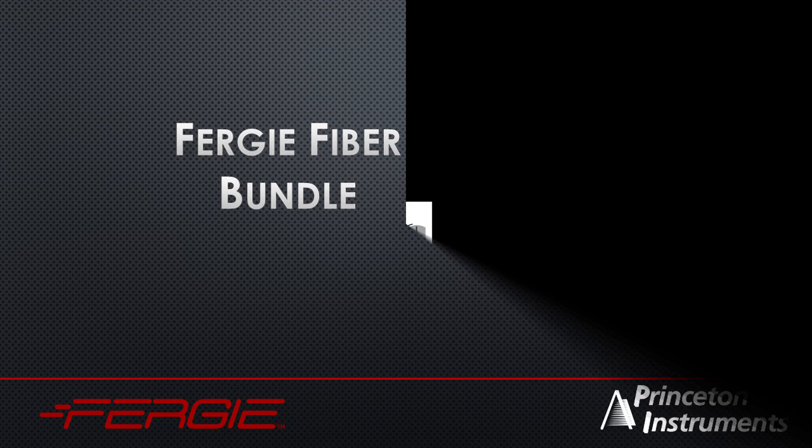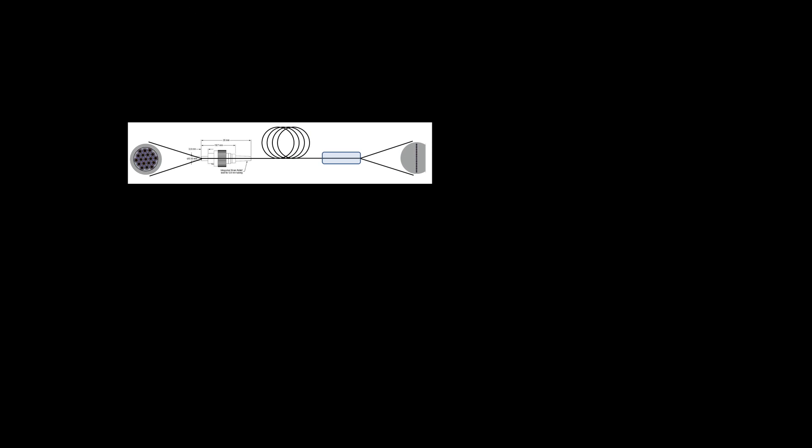The Fergie fiber bundle captures more signal from your experiment using 50 individual fibers. The spectral resolution of the measurement is maintained by distributing the fibers along the Fergie entrance slit. A Fergie separation-free, diffraction-limited imaging system keeps the spectral information of each fiber output separated.